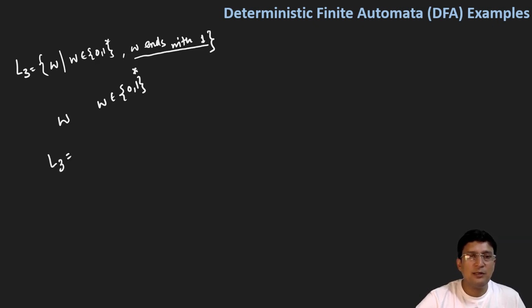Let's list out all the strings that can be part of this language. So any string that ends with one, so the smallest string is one, zero one will also be one string that ends with one, one one will also be the string that ends with one, zero one one will also be the string that ends with one, and so on so forth. It means this is an infinite language.